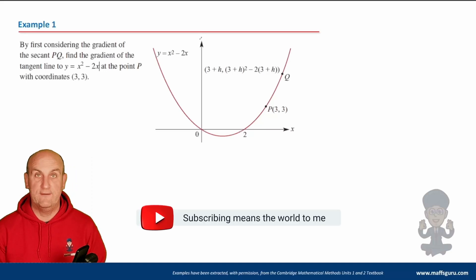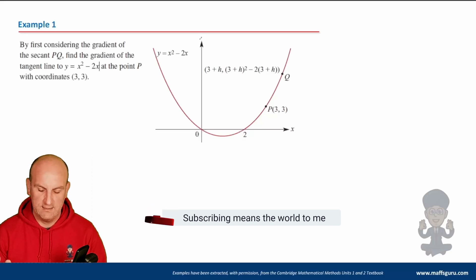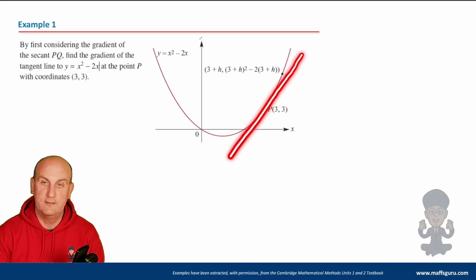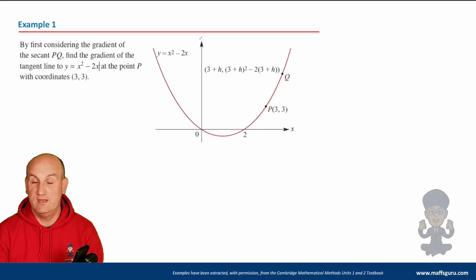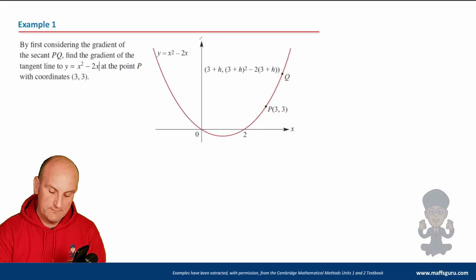If you want to pause the video and try first, go ahead. A tangent line is a line that just touches at P. We don't yet have hard and fast rules to find it directly, but we know we can draw a secant through P and Q. By doing that, we get something useful.